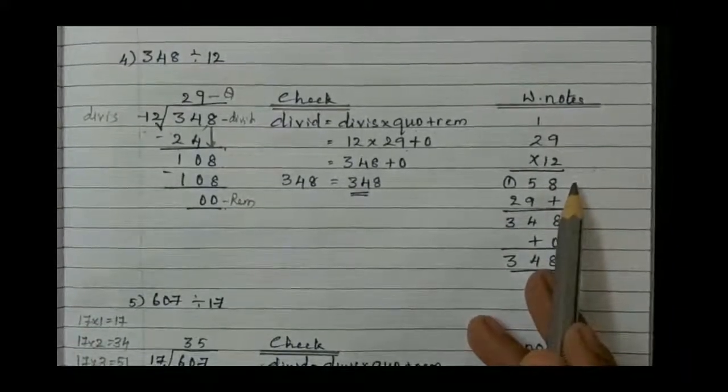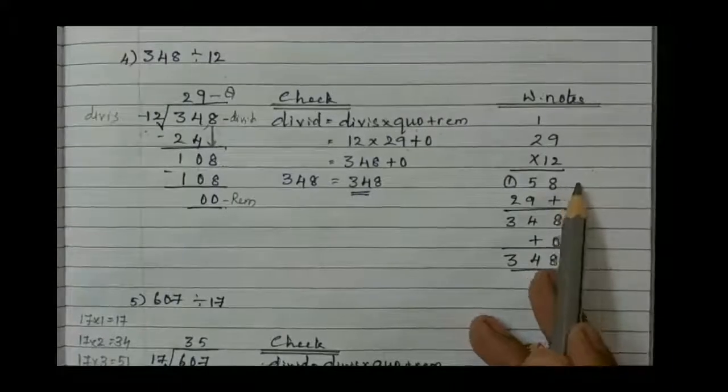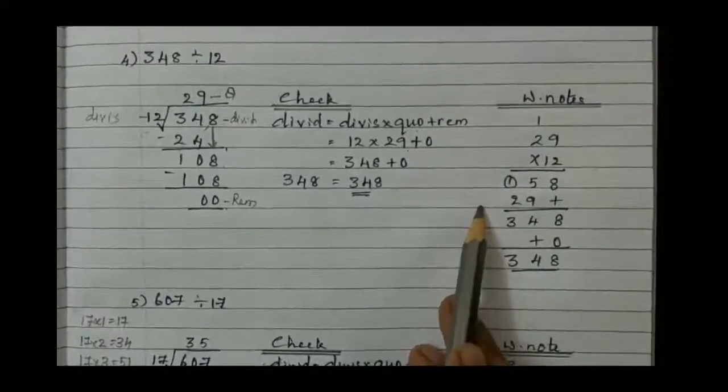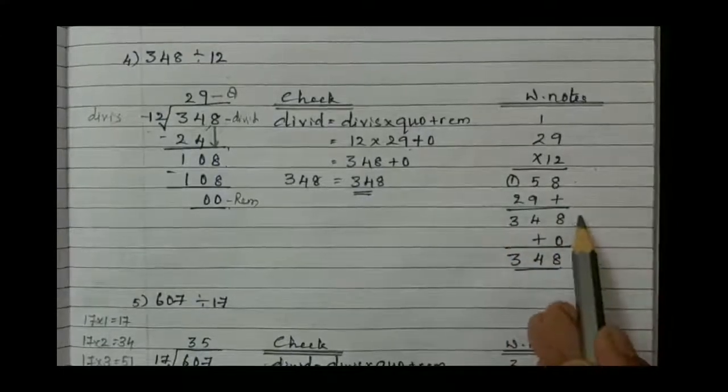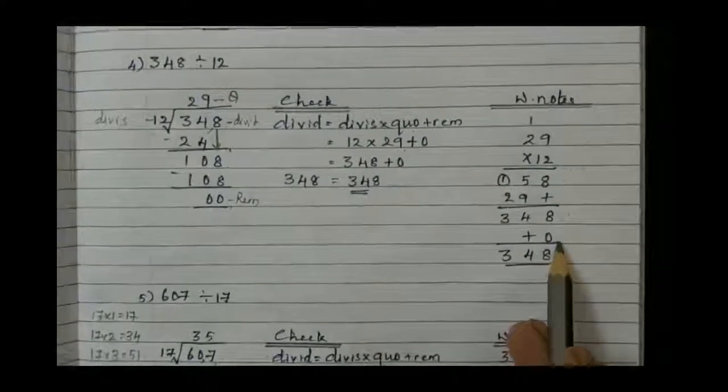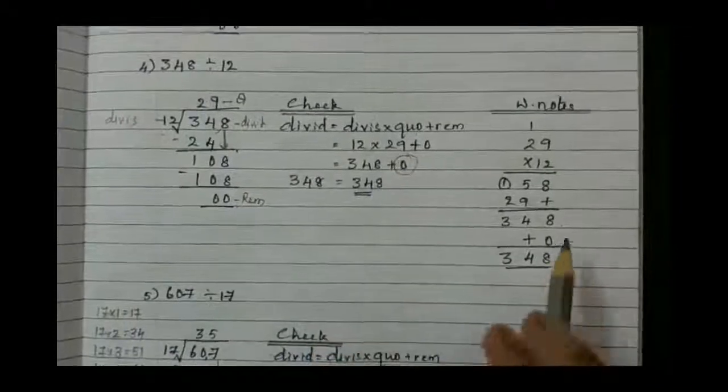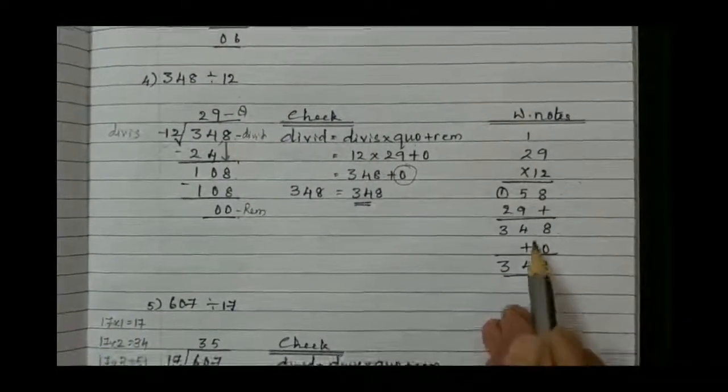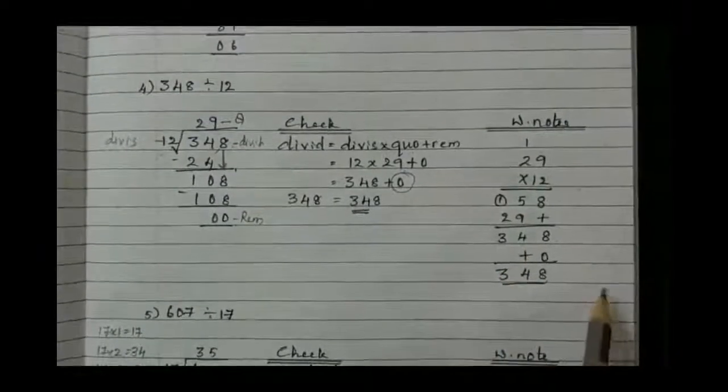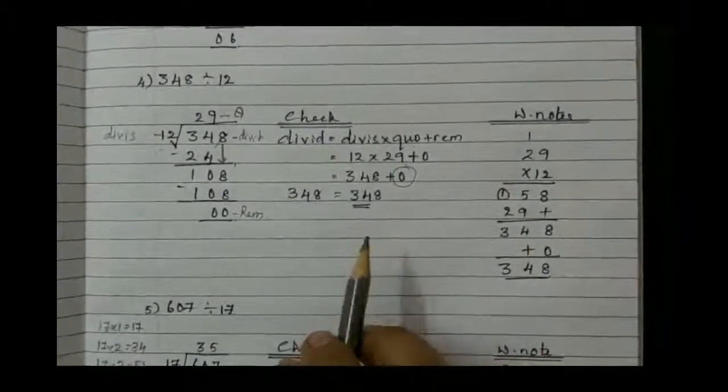So first, once if you multiply it becomes 58. Later on, 29 if you multiply by 1, the whole answer will be 348 as the product. Later to it add 0, that is remainder. Again it remains same: 8 plus 0 is 8, 4 as it is, and then 3. It is similar to the dividend.